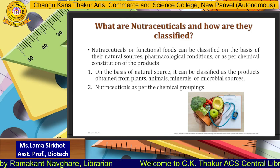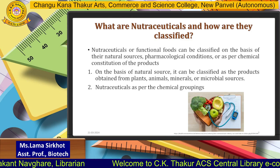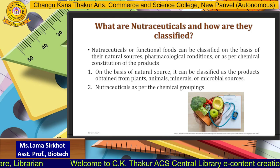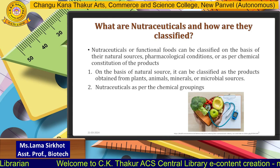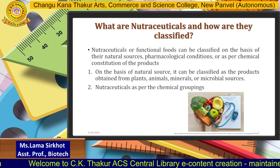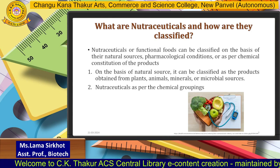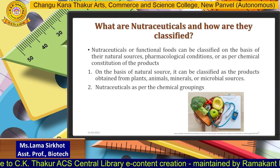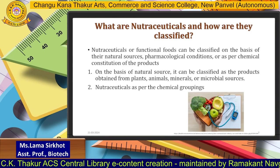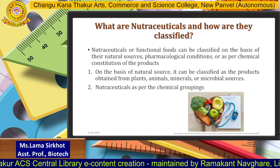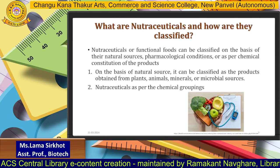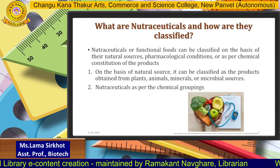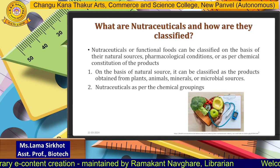On the basis of natural sources, nutraceuticals can be classified as products obtained from plants, animals, minerals, or even microbial sources. For example, ascorbic acid or Vitamin C could be called a nutraceutical obtained from oranges, which is a plant fruit product.